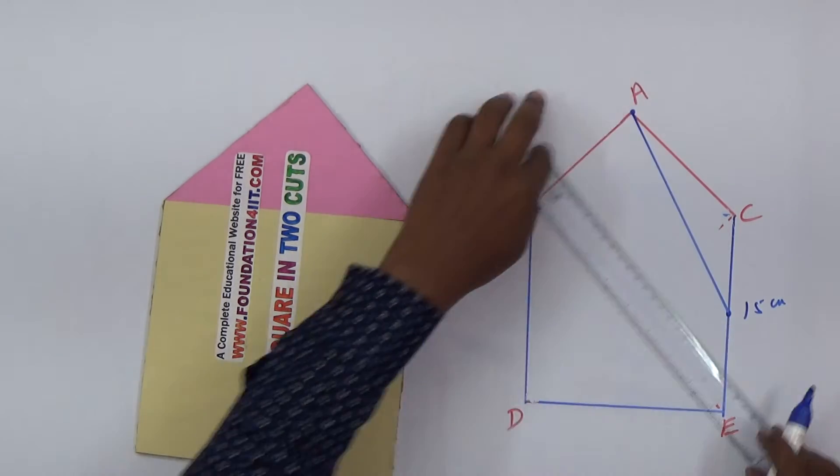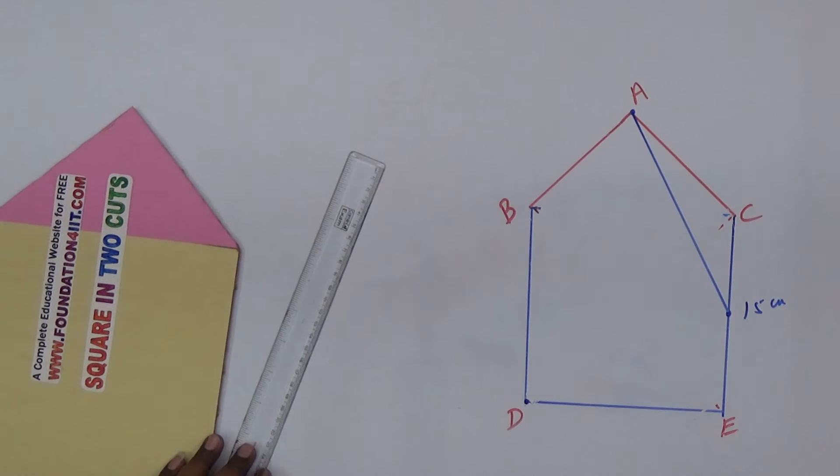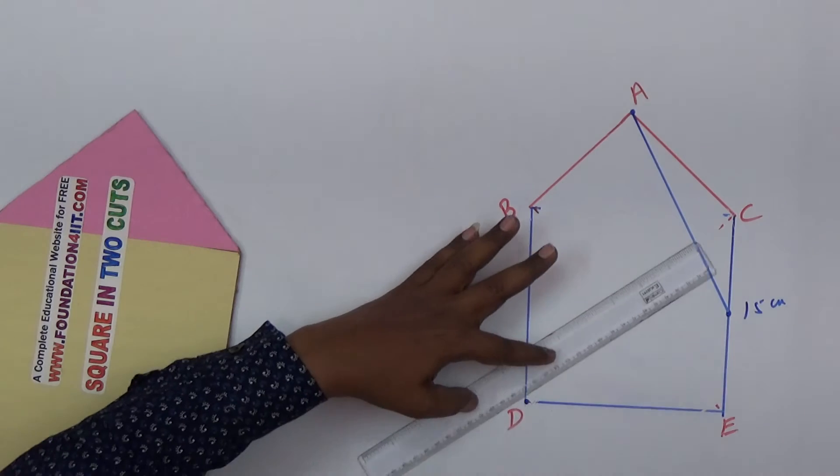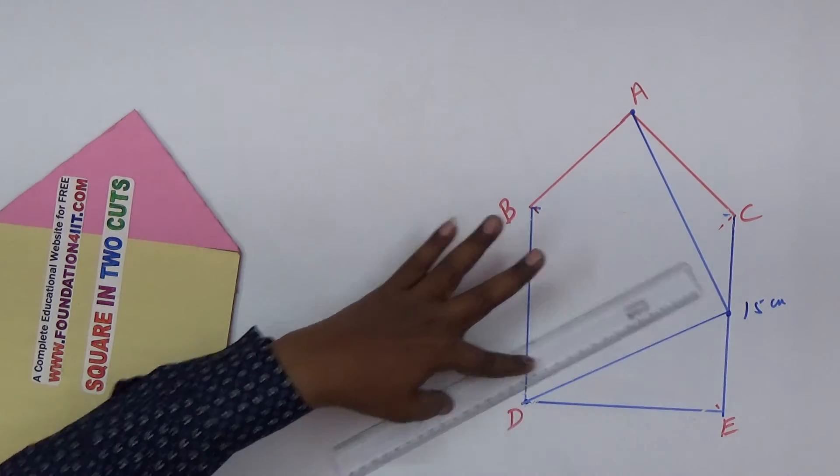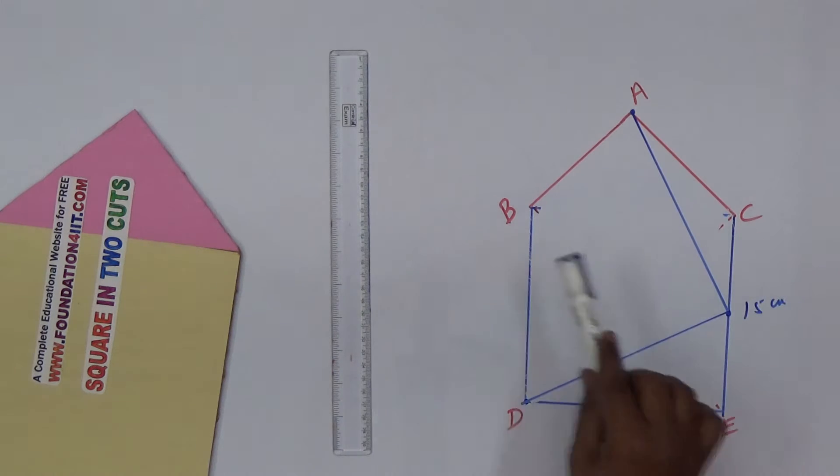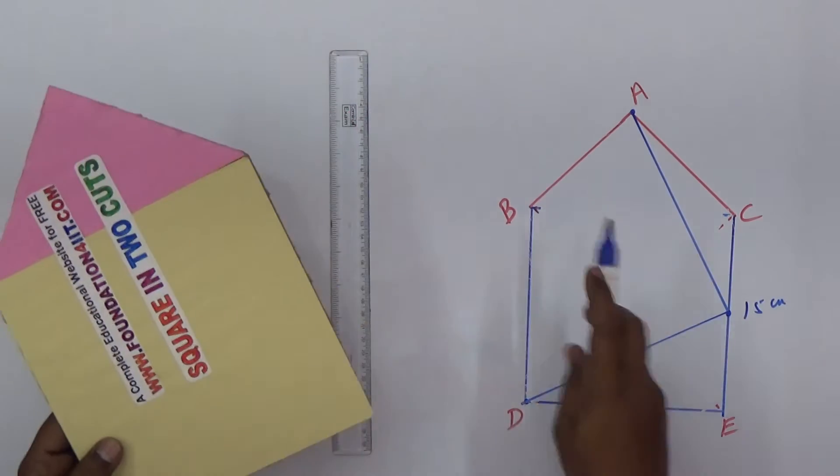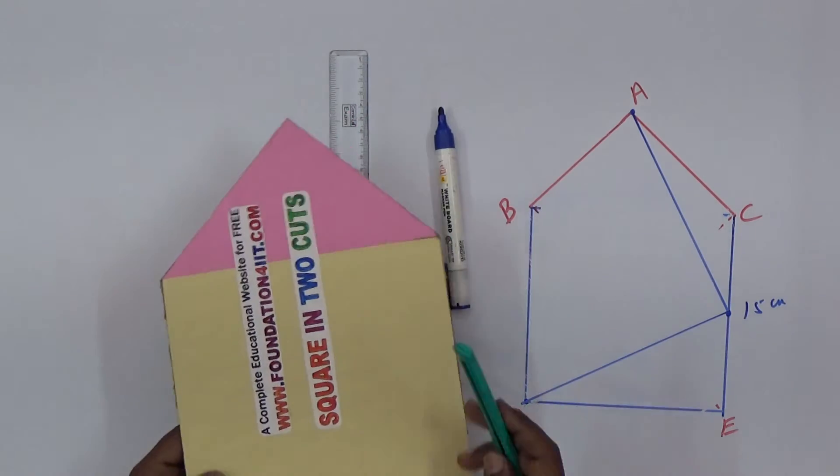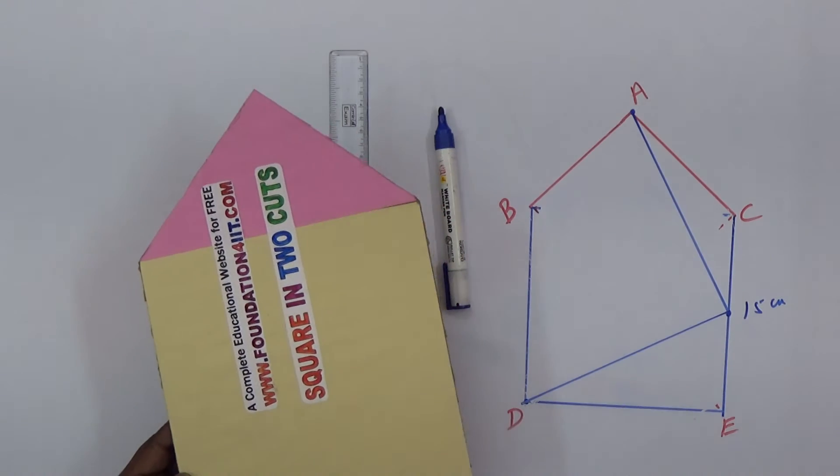There is one cut. One more from this vertex D you should join. Only two straights. Now one, two, three - these three parts if you join again it forms the square. I did this with cardboard. Let me cut this square. This is the triangle and this is square, so one-fourth of this square is the area of this triangle.